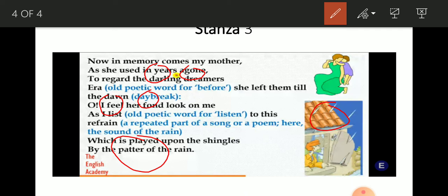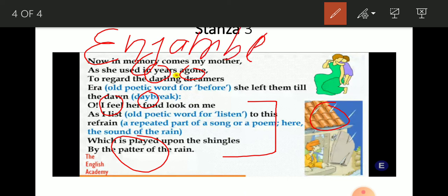Oh, I feel her fond look on me. As I list to this refrain, which is played upon the shingles by the patter of the rain. This is one line that has been divided into four lines, four fragments. So when the poet continues a line without using any punctuation to the next line, there is a figure of speech that is enjambment.